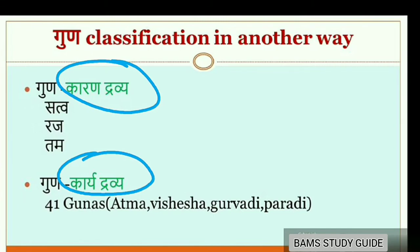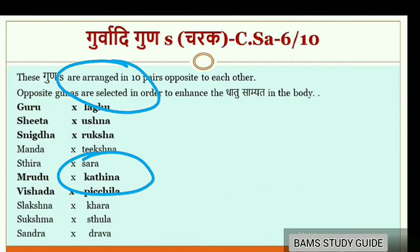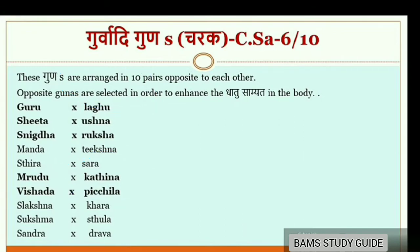Let's discuss Gurvādi Gunas according to various Acharyas. Acharya Charaka arranged Gurvādi Gunas in 10 pairs opposite to each other and mentioned these Gunas as Shariradhatu Gunas. Ashtanga Sangraha also followed Charaka's classification of Vimshati Gunas.